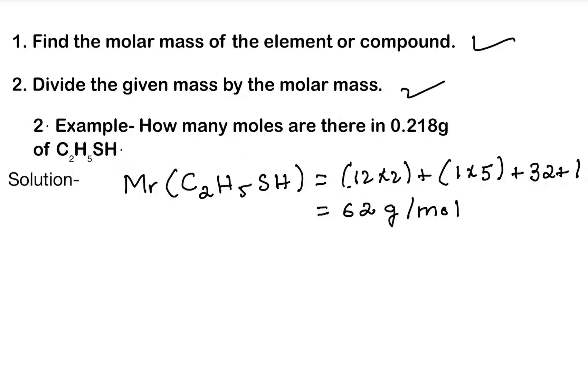Now the second step: divide the given mass by the molar mass. Mass is already given as 0.218 gram. So let's write it down: 0.218 gram divided by 62 gram per mole. And final answer will be 0.004, if we round it off, moles of C2H5SH. So this is our final answer.